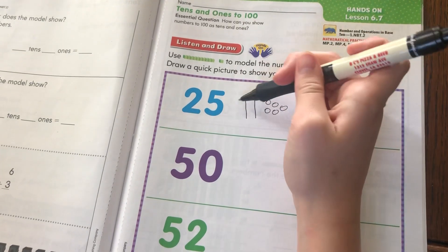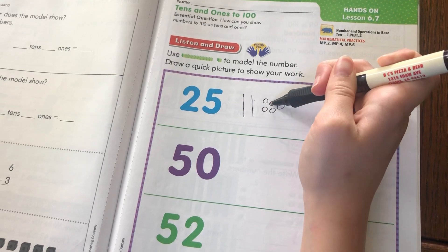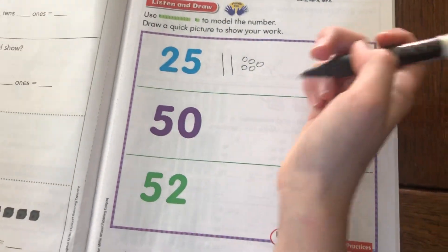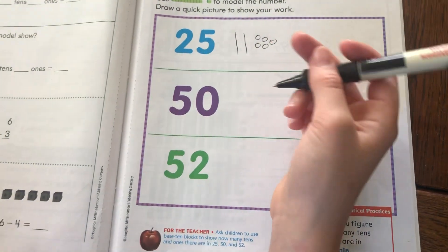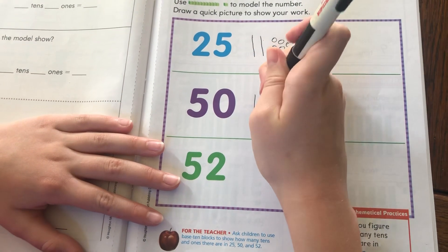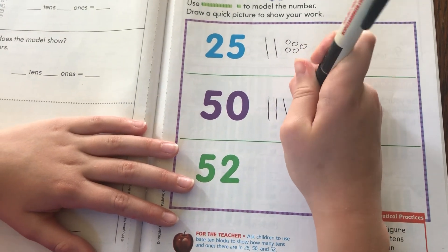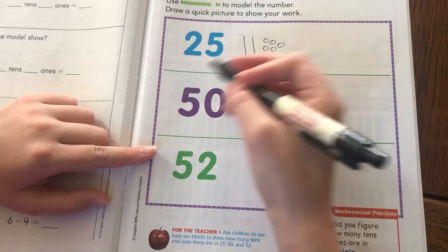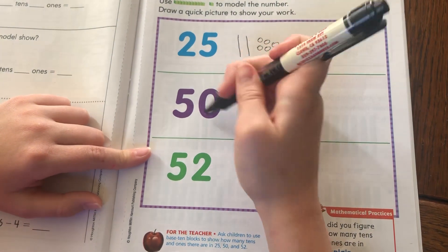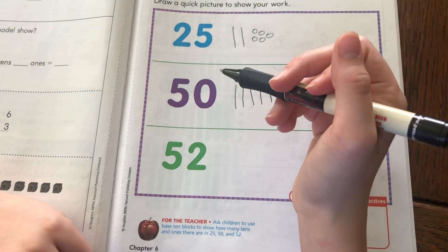This next one's really easy because it's 50, so I'm only going to do one ten, two is twenty, three, thirty, four, forty, five, fifty. There's a zero here, so there's no ones. It's just 50. Can you count that for me? Yeah, 10, 20, 30, 40, 50.